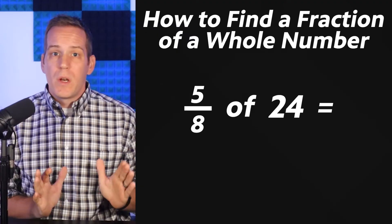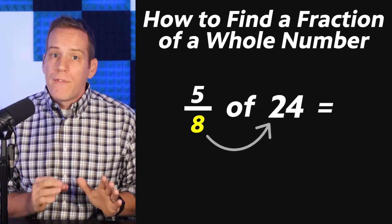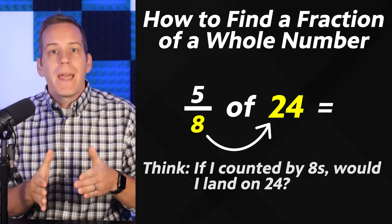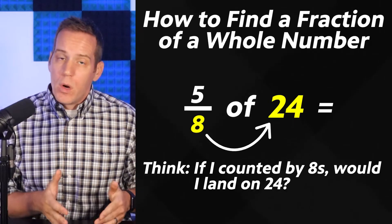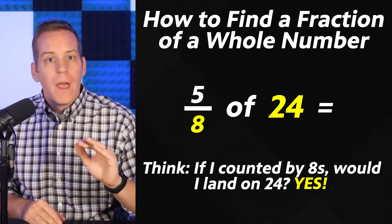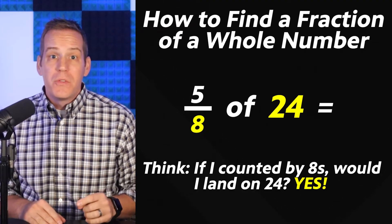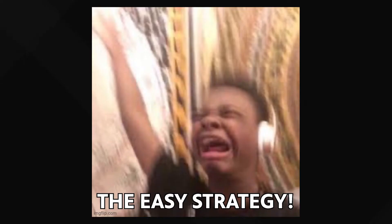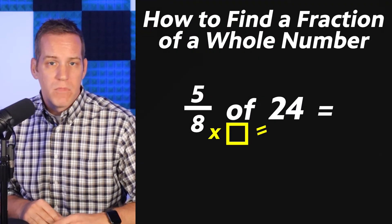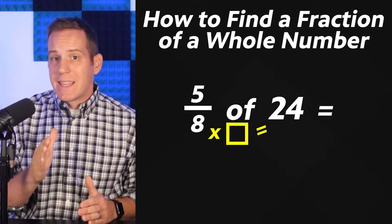To find 5 eighths of 24 we're gonna see if the denominator 8 can go perfectly into the whole number 24. In other words if I counted by eighths would I land on 24? In this problem yes. So 8 goes into 24 perfectly and that means I can use the easy strategy. Here's how it goes. 8 times what makes 24? 3. So I'm gonna write a times 3 next to the 8 like this.